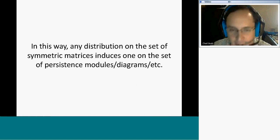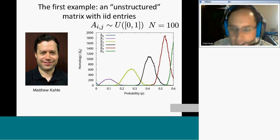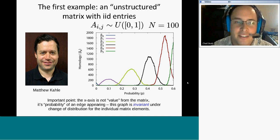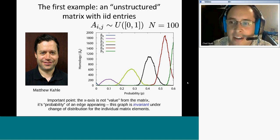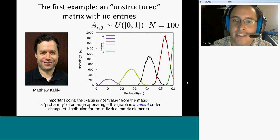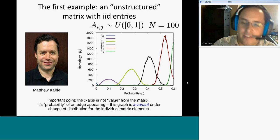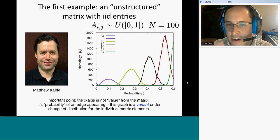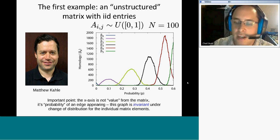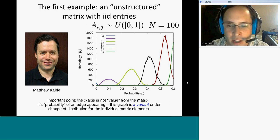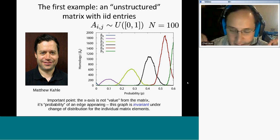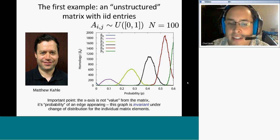So this induces through this process a distribution on a set of persistence modules. And like I said, I didn't get here first. Matt Kahle did. So this is a picture from one of his very first papers on random clique complexes. If you take a random clique complex on a matrix with five entries, and you apply this procedure, and then here's a matrix with 100 entries, or a 100 by 100 matrix, and he's choosing the entries uniformly. And finally, the Betty numbers rise and fall in this wonderful unimodal distinct way. It's just one of the best pictures in all of topology.